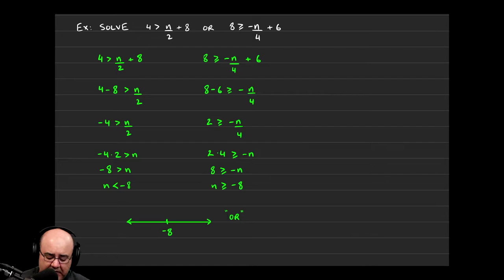For the other side, or for the other inequality, we have 8 is greater than or equal to negative n over 4 plus 6. So here, again, we're trying to isolate for n. So the 6 moves over. 8 minus 6 is 2. So there's the 2. The negative n over 4 just comes along for the right.